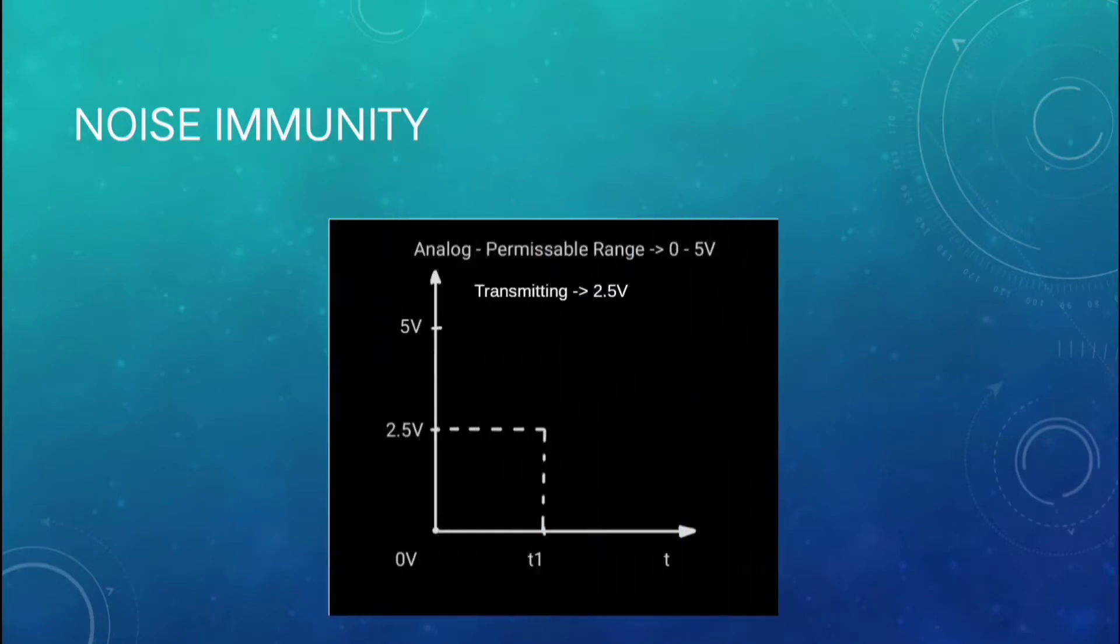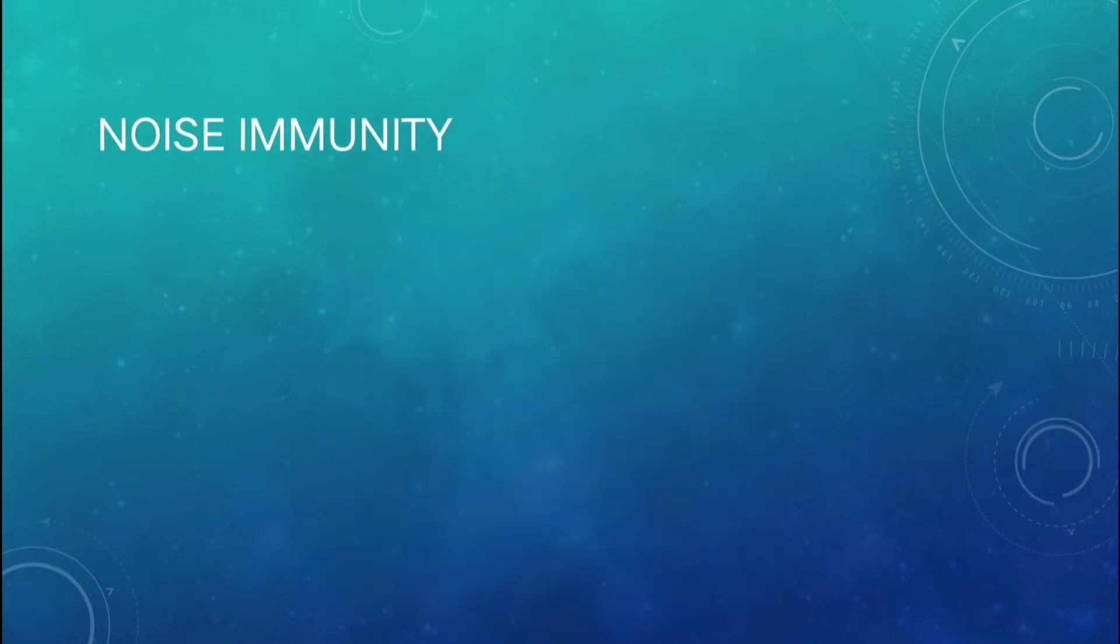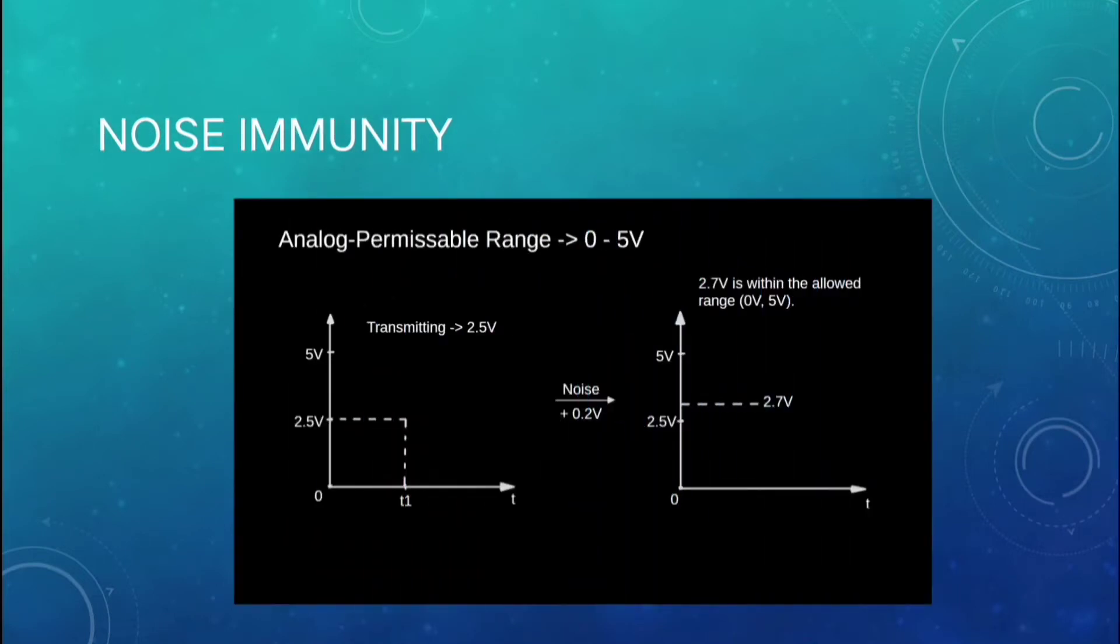For example, consider an analog system where the permissible range is 0 to 5 volts and we want to transmit 2.5 volts. If a noise of 0.2 volt from the channel is added to the signal, then the voltage received will be 2.5 plus 0.2, that is 2.7 volt, and it will be considered correct as 2.7 volts is in the permissible range.